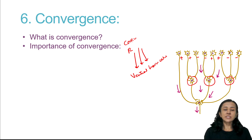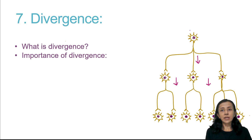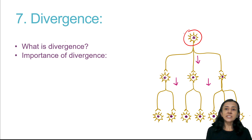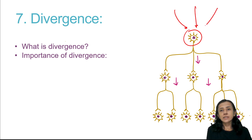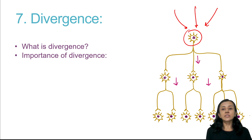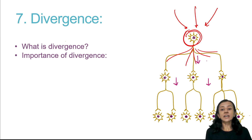Opposite to convergence is divergence — when one presynaptic neuron has synaptic connections with many postsynaptic neurons. In a single neuron we can find both convergence and divergence. The role of divergence is magnification — when stimulating only one neuron, all connected neurons are stimulated, magnifying the activity.